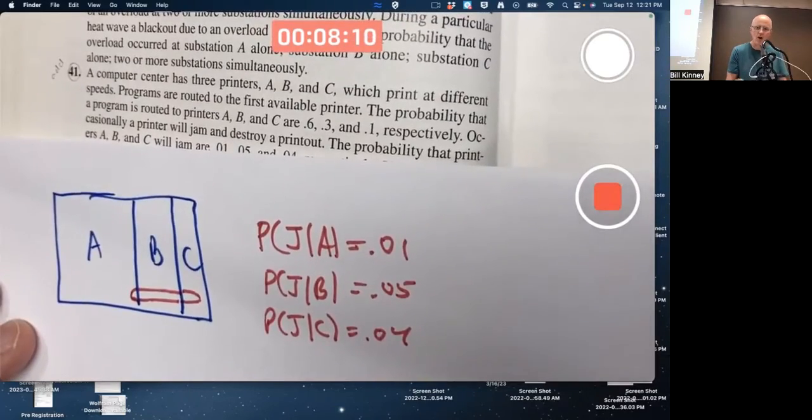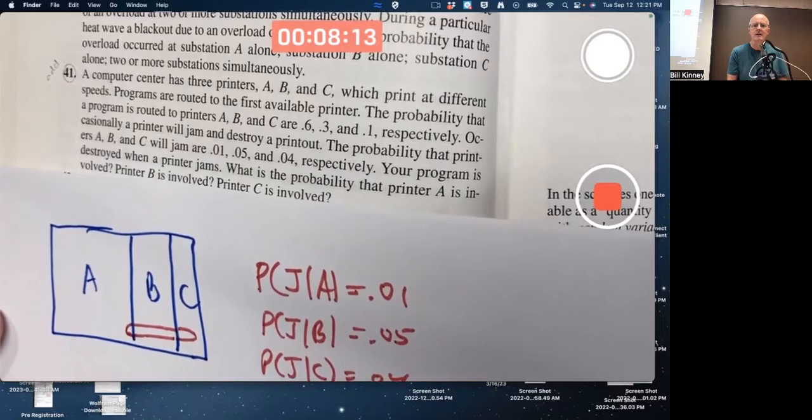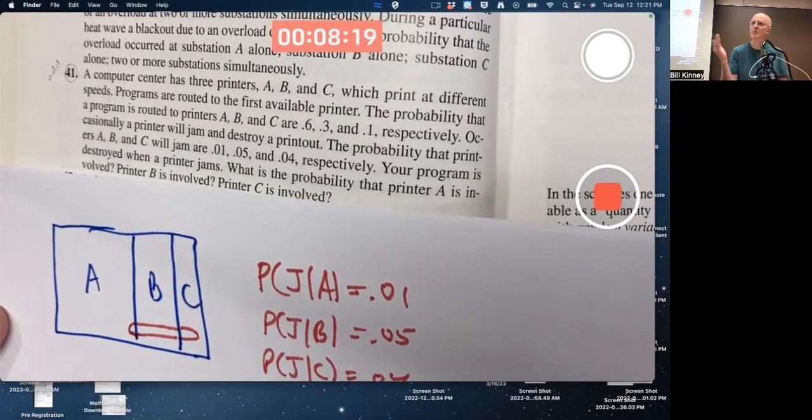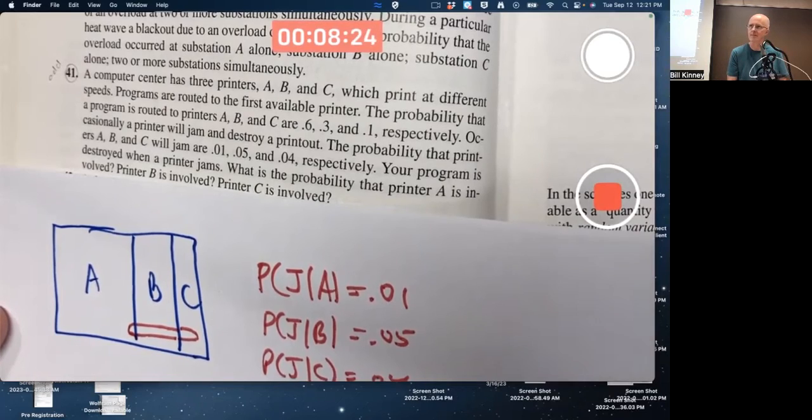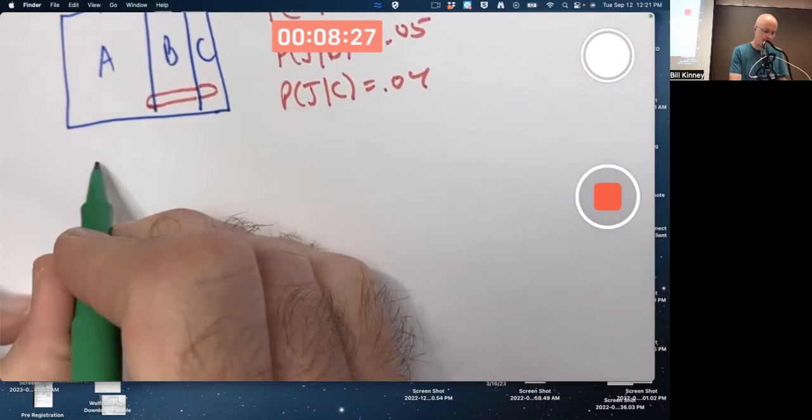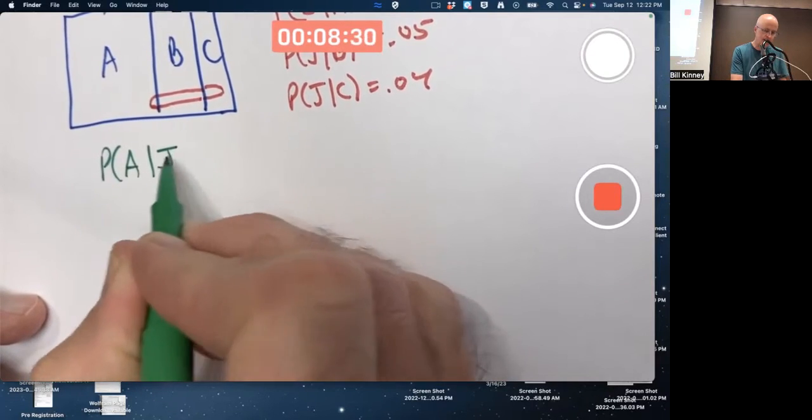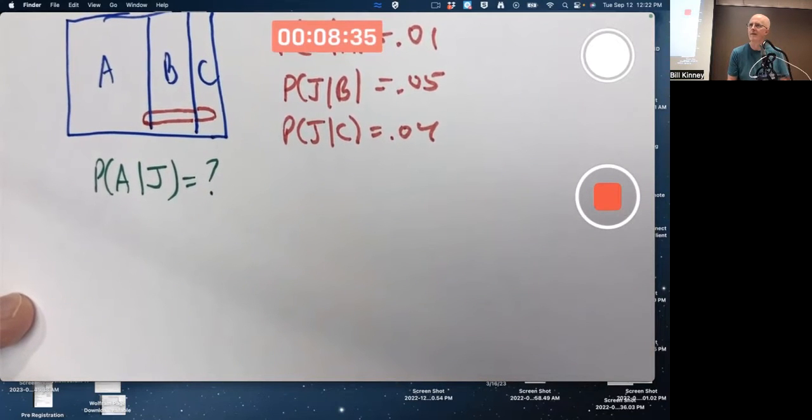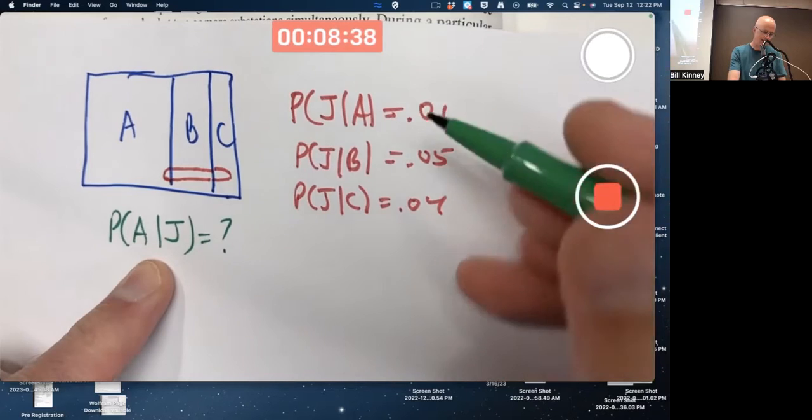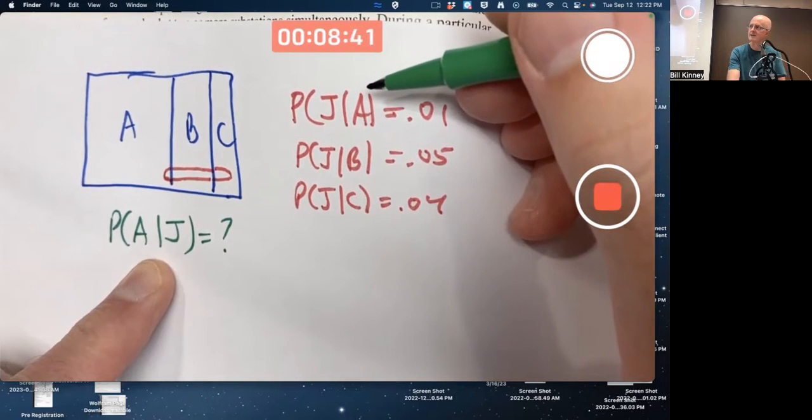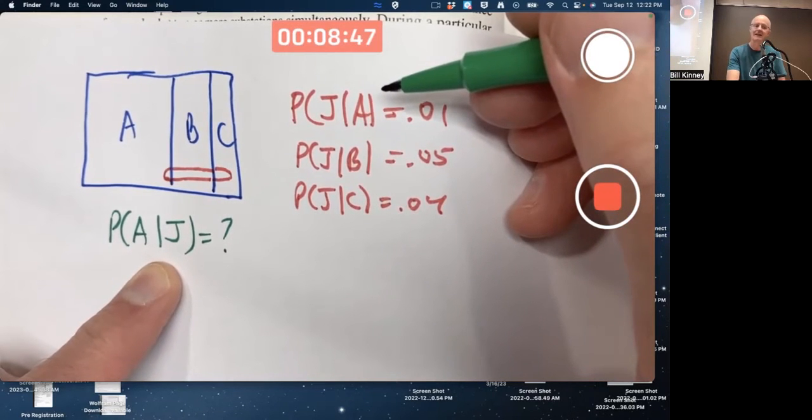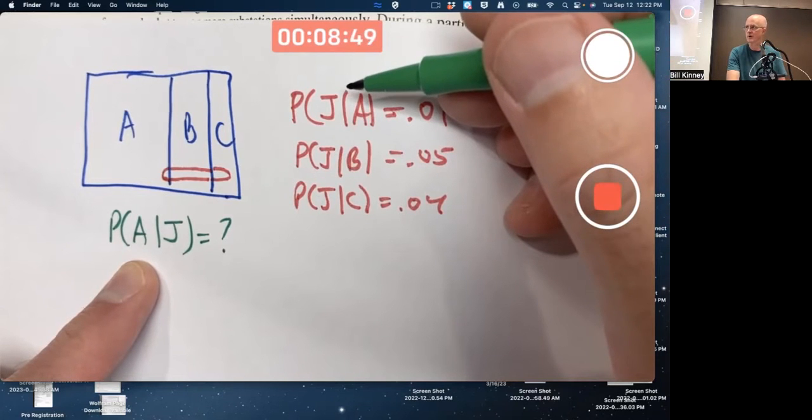So this is just drawing and writing down what you're given. Your program is destroyed when the printer jams. You're assuming the printer has jammed. You don't know what printer it was sent to. What is the probability that it was A, B, or C? You're trying to find this kind of conditional probability. It's given that it has jammed. Notice that's got A and J switched around from this. It is a different kind of conditional probability. The thing on the right is always the given that. The thing on the left is always what you're trying to find the probability of.